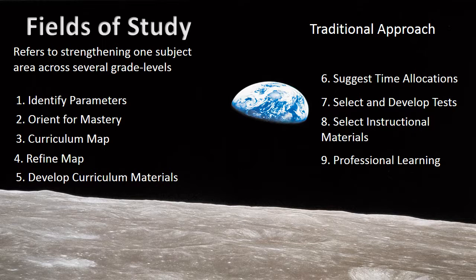Step five is to develop curriculum materials — handouts, worksheets, study guides, any documents used to teach the standards, plus learning activities: games, manipulatives, videos, or websites students would access. All of these would be part of the curriculum resources. Step six addresses time allocations. I personally see that as part of the same process as developing the curriculum map — basically just specifying how many days you'll spend on each topic.